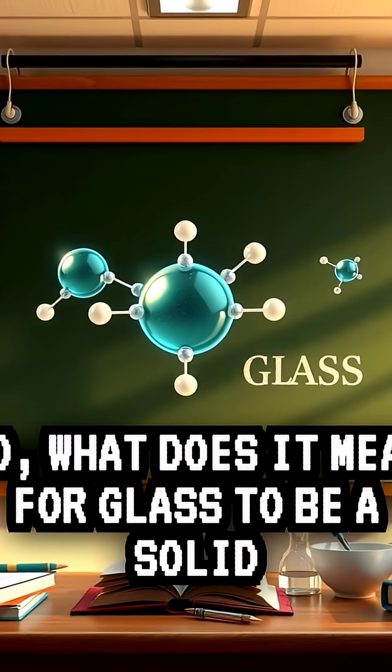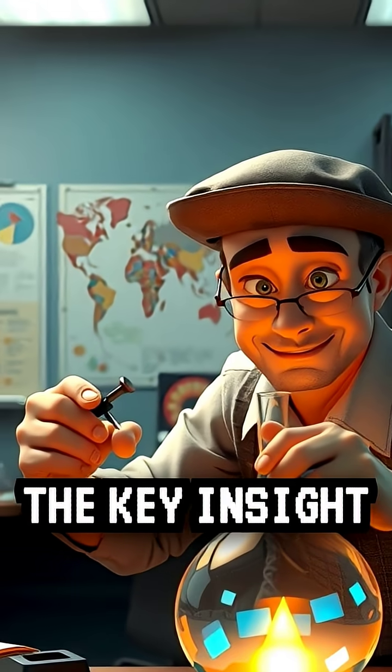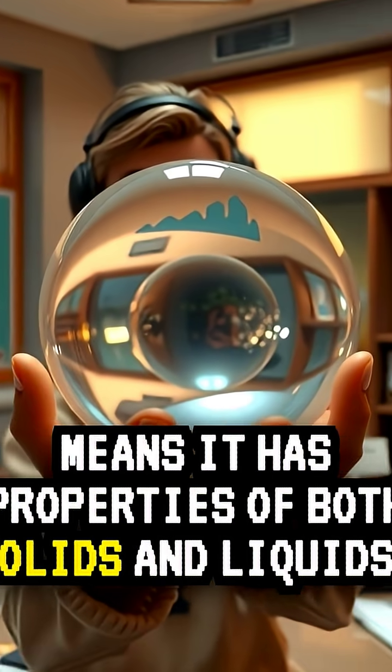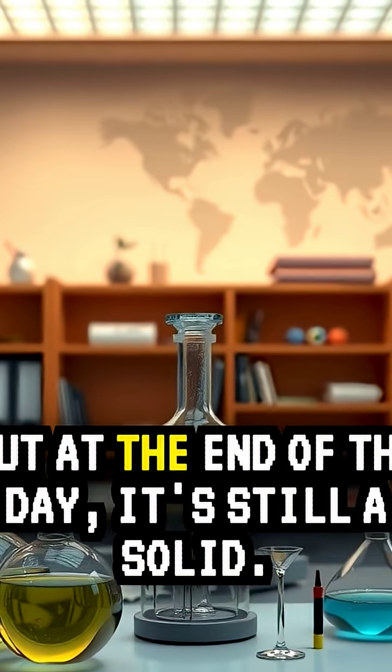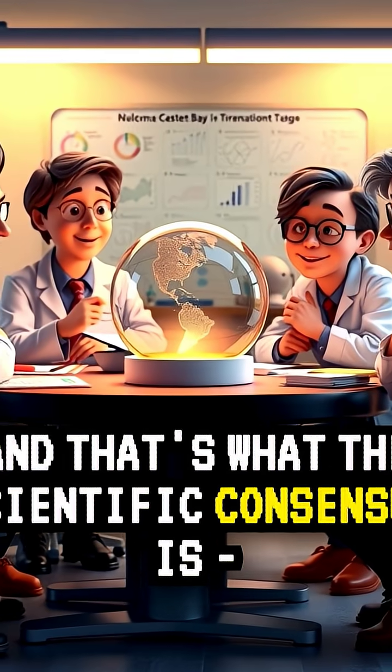So what does it mean for glass to be a solid if it's not like other solids? The key insight here is that glass is an amorphous solid, which means it has properties of both solids and liquids. But at the end of the day, it's still a solid. And that's what the scientific consensus is.